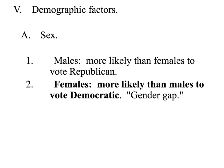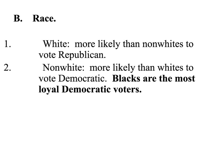Gender plays a role in voting: males are more likely to vote Republican, females are more likely to vote Democrat. The idea that females are more likely to vote Democrat is called the gender gap. Race also matters: white people are more likely to vote Republican, non-whites are more likely to vote Democrat, and Black voters are the most loyal Democratic voters.